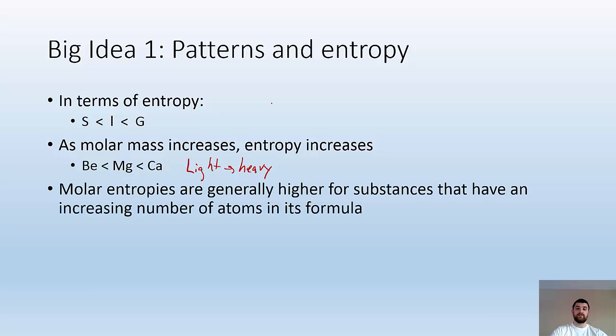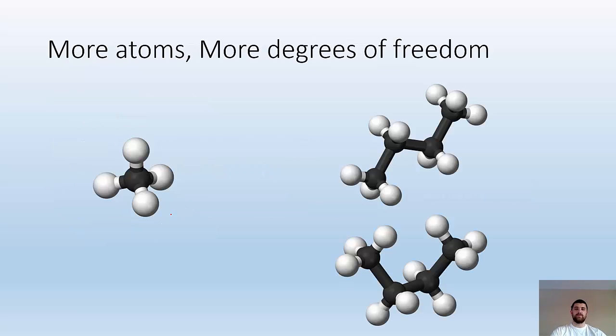Molar entropies are generally higher for substances that have an increasing number of atoms in their formula. For example, CH4 has less entropy than butane (C4H10), which has four carbons and ten hydrogens as opposed to just one carbon and four hydrogens. Let me explain why: the more atoms, the more degrees of freedom you got.